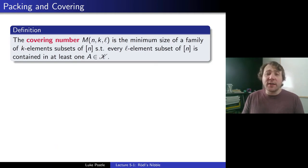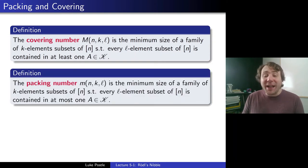But let's actually move back in history from the design conjecture to an approximate version of it. So this is called the covering number. The covering number M(n,k,ℓ) is the minimum size of a family of k-element subsets of [n], such that every ℓ-element subset of [n] is contained in at least one. So instead of an (n,k,ℓ) block design, what if we just want to make sure that all of the ℓ-element subsets are covered? What's the minimum size we can do that in? So that's the so-called covering number, and that's dual to the so-called packing number.